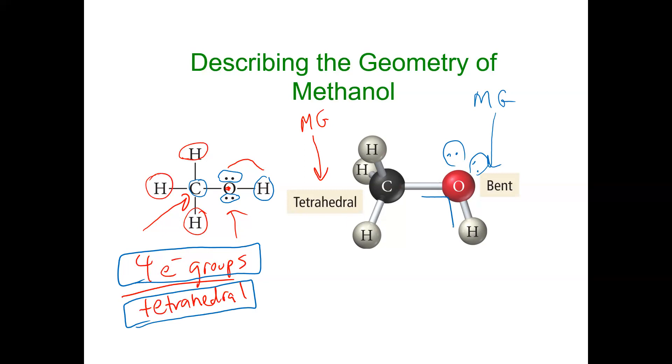So the bond angle between carbon and hydrogen here, because it's only surrounded by atoms, is 109.5 degrees because carbon has no lone pairs.